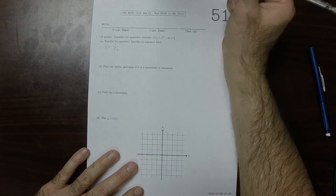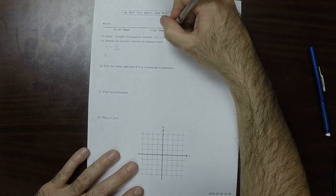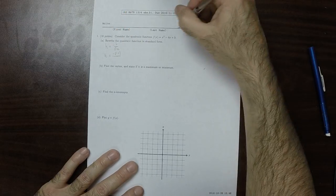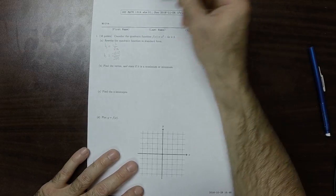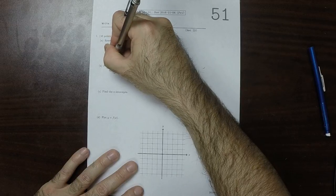On this particular exercise, that is negative negative 4 over 2 times 1. The negatives cancel, so that's 4 over 2, so the horizontal coordinate of the vertex is 2.